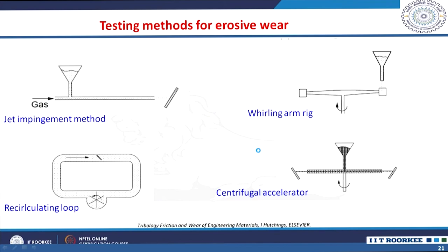Testing methods to assess erosive wear include the jet impingement method, where a gas-particle mixture is impinged on the surface at a particular velocity, angle, temperature, and humidity to assess material removal. A whirling arm jig rotates the material and impinges particles on the component. A reciprocating loop or centrifugal acceleration method drops particles with centrifugal force to damage the material and assess erosive wear.